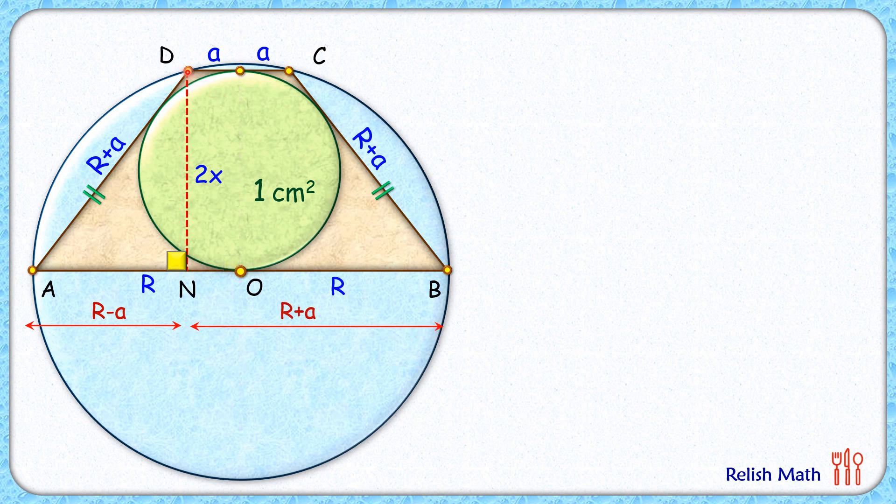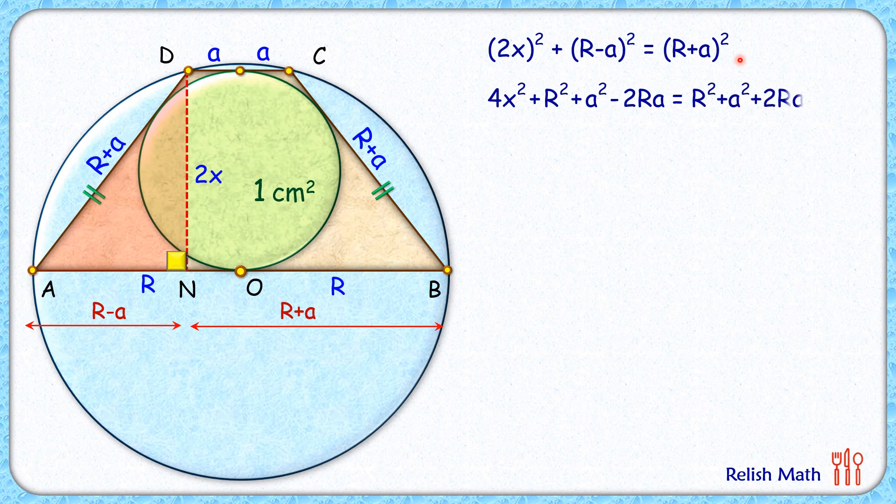Now if you look at this right angle triangle DAN, applying Pythagorean theorem we will get (2x)² plus (R-a)² equals (R+a)². Now opening up the brackets on LHS here, applying formula for a minus b whole square we'll get this term. RHS let's apply formula for a plus b whole square. Now both sides we can see that R² is getting cancelled down and a² is getting cancelled down. Now this term when it goes on the right side it becomes 4Ra. 4 will get cancelled down and we'll get value of x² as R times a.